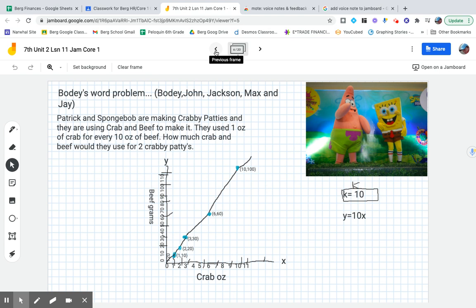from Bodie, John, Jackson, Max, and Jay, so they should definitely get these right. You can see that Patrick and SpongeBob are making Krabby Patties and they're using crab and beef to make it. They use one ounce of crab for every 10 ounces of beef. How much crab and beef would they use for two Krabby Patties? Well, I don't see the answer to that one or a question mark.